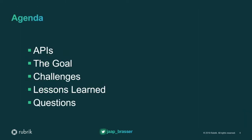What I'll cover is: what kind of API do we actually have and what are we building on top of? What were our initial goals? What kind of challenges did we run into? And what did we learn from going through the entire process? At the end I probably won't have a lot of time for Q&A, but I'll be hanging out in this room for most of the day, so feel free to hit me up.